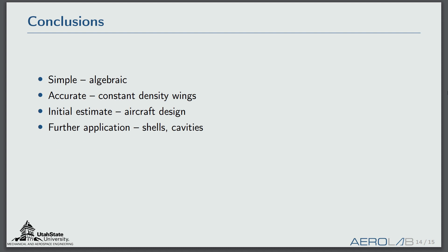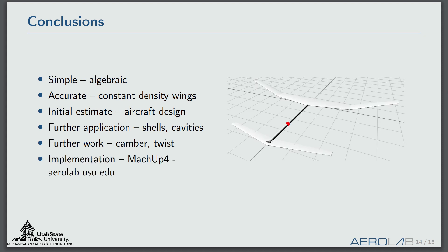Further work could look at adding camber and twist to these equations so those approximations are no longer needed. Within the next month or so, this method will be implemented in MachUp4, an online GUI web-based aerodynamics tool developed in-house by our lab, available at aerolab.usu.edu. You'll be able to calculate the inertia of your aircraft directly in that web environment. Thank you for listening — I'll answer any questions or comments in the video description.